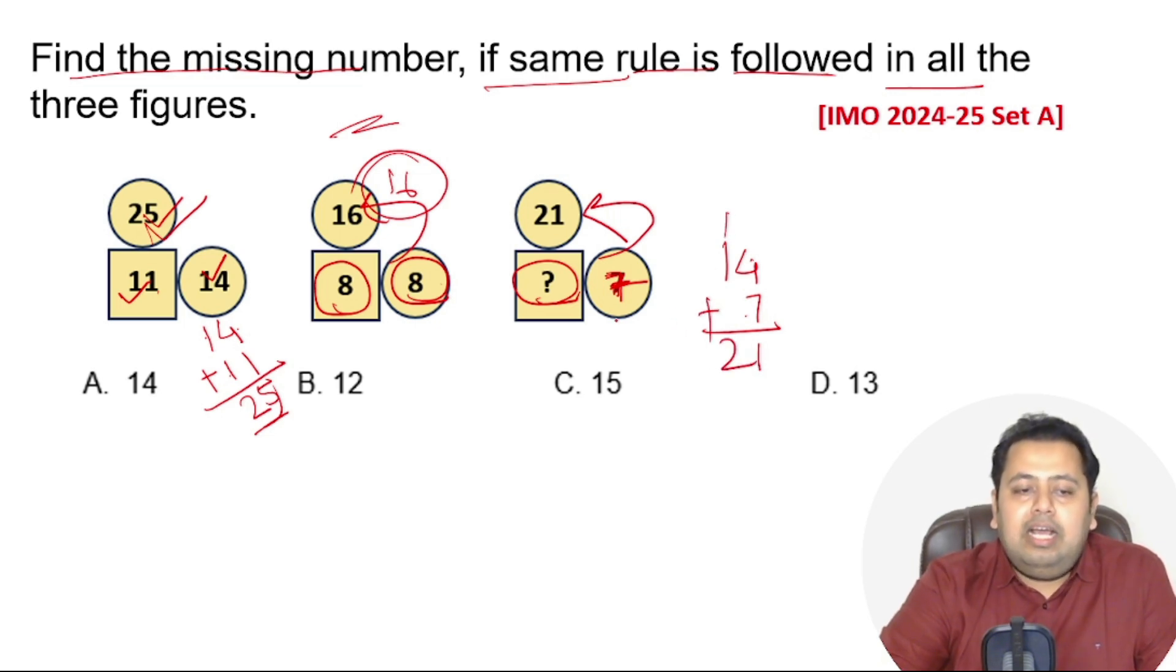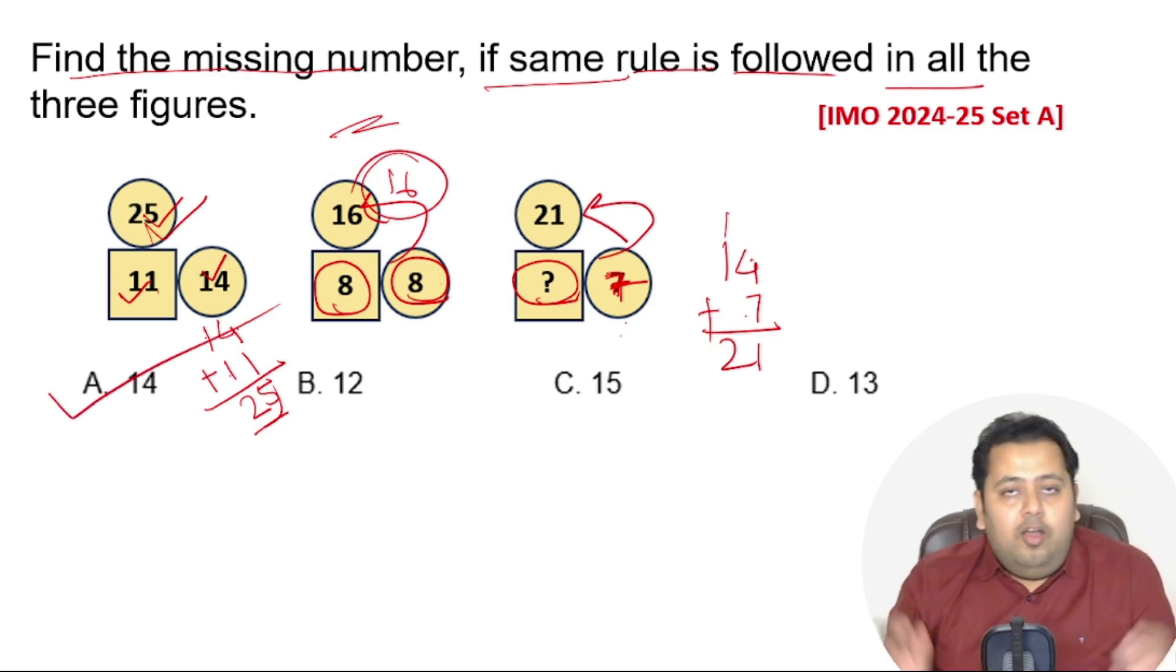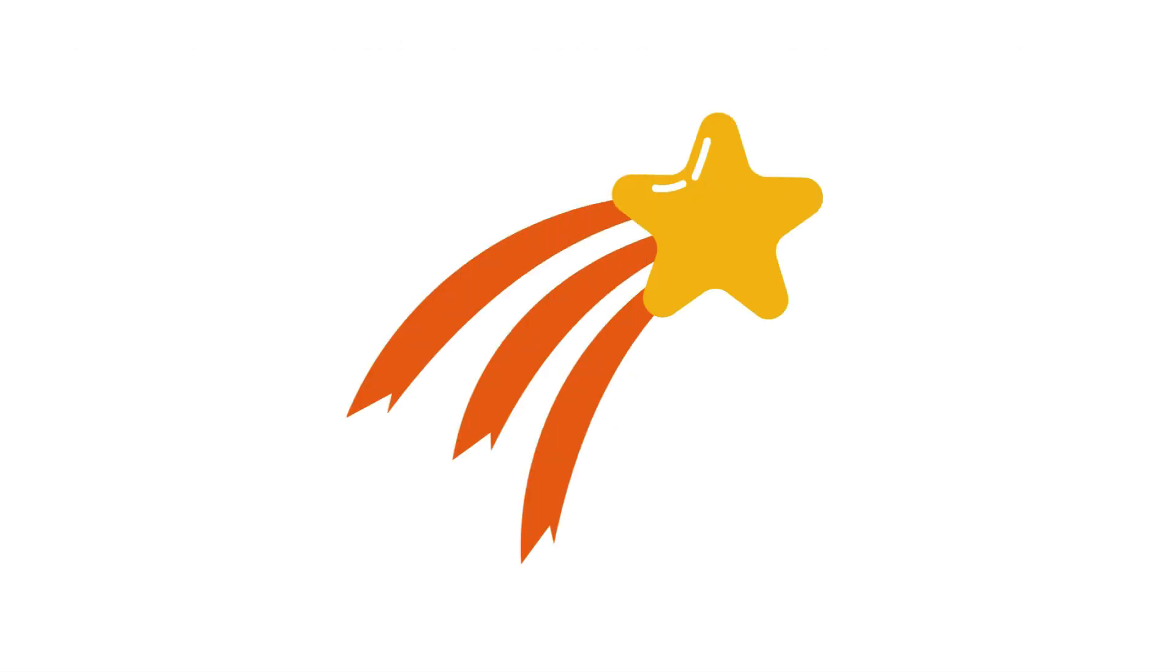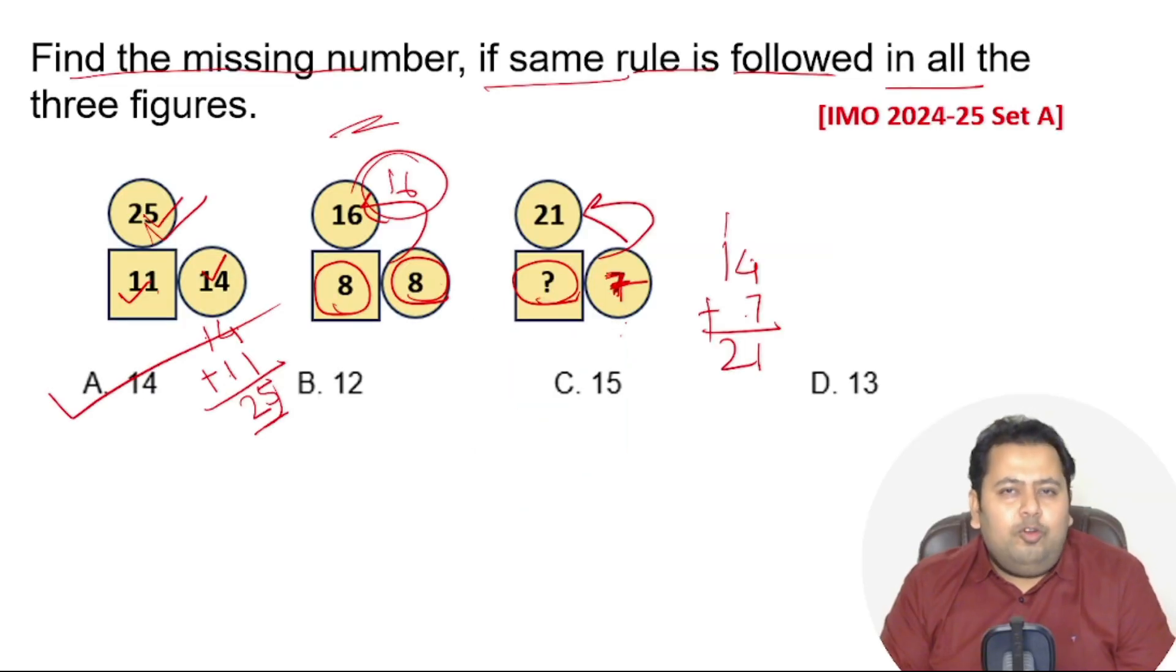So this is nothing but 14, right? 14 plus 7, 7 plus 14 is 11, 1 goes over and 21. So the answer is nothing but A, 14. Hope you have already solved the problem. If you did, then well and good, give yourself a clap. If not, you have learned something new today.